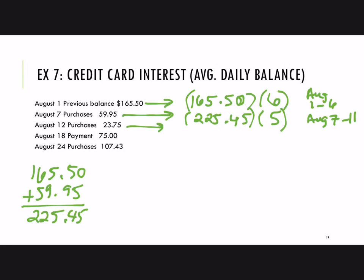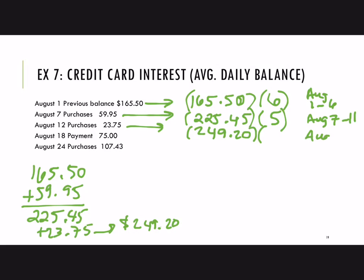Then on the 12th, there's a new purchase. So we have $225.45, and we add $23.75 — the amount of the next purchase — giving us $249.20. That's the new balance on August 12th, and it's carried from the 12th through the 17th, which is another six days.